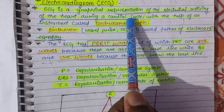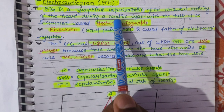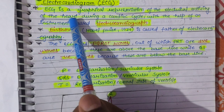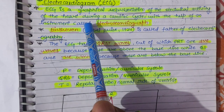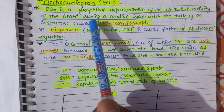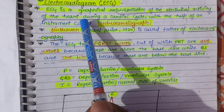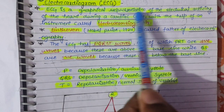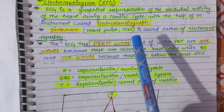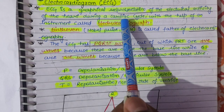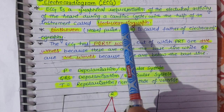हृदय चक्र के दौरान, हृदय के अंदर पाई जाने वाली समस्त वैद्युत गतिविधियों को एक ग्राफ के रूप में प्रदर्शित किया जाता है, और उसी को ECG के नाम से जाना जाता है। ECG एक graphical representation है। जिस instrument की मदद से यह संपन्न होता है उसका नाम है Electrocardiograph।